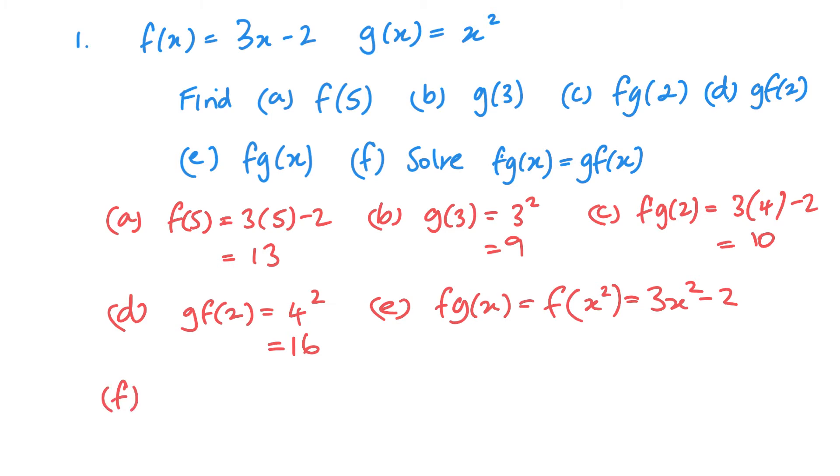And then f, we need to solve this. So fg of x, we've already got, 3x squared minus 2. We need g of x as well. So I'll do that over here. gf of x. So it's g of 3x minus 2. So it's 3x minus 2 squared. So if I'm solving fg of x equals that, so it's this equals 3x minus 2 squared. So let's expand. 9x squared, minus 12x plus 4. 3x squared minus 2. So we've got 6x squared minus 12x plus 6.